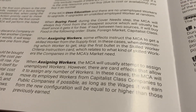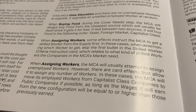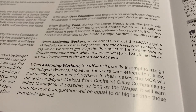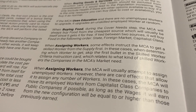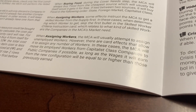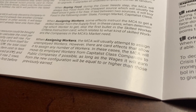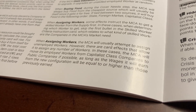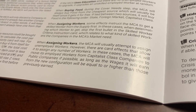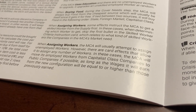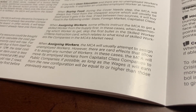When assigning workers, some facts tell the middle class Atoma to get skilled workers from the supply first. If that is the case, when deciding which worker to get, skip the first bullet in the skilled worker criteria instruction card, which deals with the types of skilled workers that the middle class Atoma's market needs. Typically, the middle class Atoma will try to assign unemployed workers, but there are some card effects that allow them to assign any number of workers. In that case, they will prioritize assigning their workers from the capitalist businesses to the public companies, as long as the wages earned would be equal to or higher than those earned from working in the capitalist company.